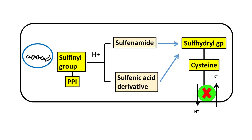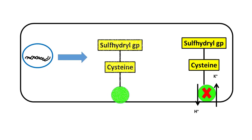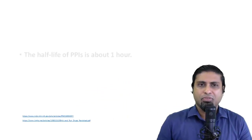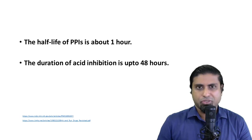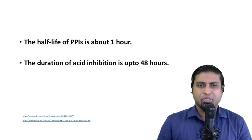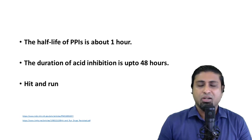The inhibition of the parietal cell from secreting hydrochloric acid is not permanent. Genes in the DNA of the parietal cell will be transcribed and translated to synthesize fresh proton pumps. However, this process takes at least 24 to 48 hours. This explains why, in spite of a half-life of around one hour, the duration of action of a proton pump inhibitor can go up to 48 hours — which is why a proton pump inhibitor is sometimes called a hit and run drug. This is analogous to a driver hitting a pedestrian and escaping from the scene with no trace left.